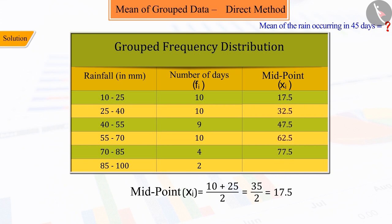To obtain the mean, multiply all these midpoints with their corresponding frequencies.